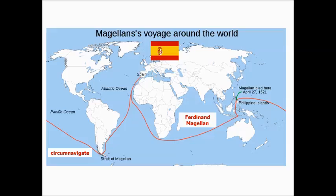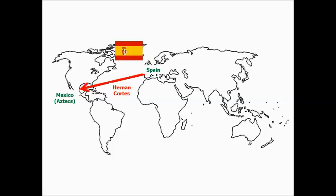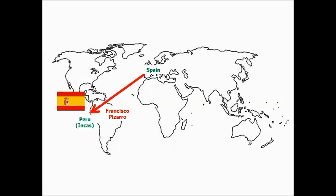Ferdinand Magellan, the second Spanish explorer, sails west but goes farther south and is the first given credit for circumnavigating the globe — his voyage went from Spain completely around the world. Unfortunately, Magellan does not complete the trip and is killed somewhere in the Philippines, but he is still credited as the first to circumnavigate the globe. Third, Hernán Cortés — also a conquistador — sails from Spain and conquers the Aztecs, stealing their gold. Fourth, Francisco Pizarro sails west, runs into Central America, ends up in Peru, and steals the gold from the Inca.